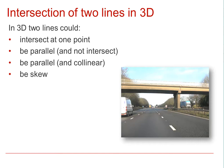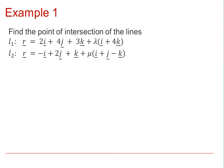I suggest you pause the video for a moment and try out these possibilities in 3D for yourself with two pens. If we are asked to find a point of intersection of lines L1 given by the vector equation R equals 2i plus 4j plus 3k plus lambda i plus 4k, and line L2 given by the vector equation R equals minus i plus 2j plus k plus mu i plus j minus k,